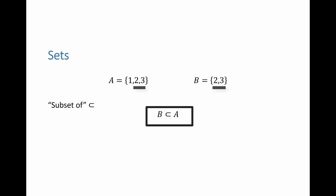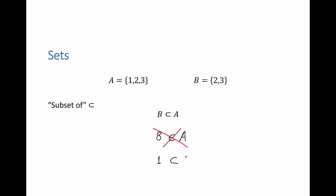Note, we cannot say that B is an element of A — this is not correct. Similarly, we cannot say that 1 is a subset of A. Again, this is incorrect. However, we can say that the set containing the element 1 is a subset of A. So this is the correct way of using the subset symbol.